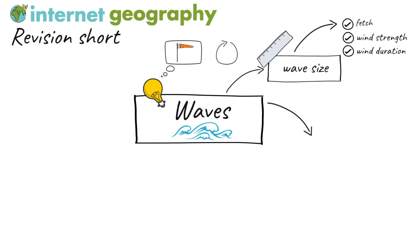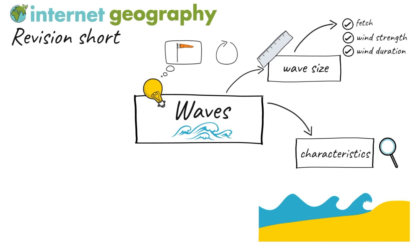Waves have several characteristics it is useful to know. The highest part of a wave is called the crest. The lowest surface area of a wave is called the trough. Wavelength is the distance between the crests.